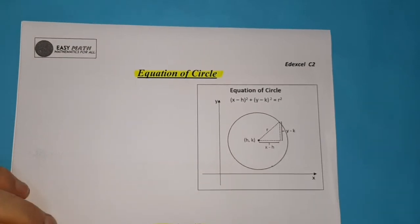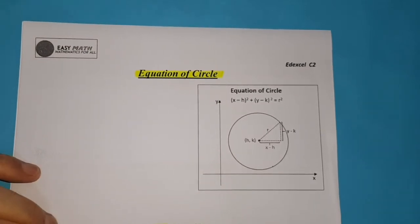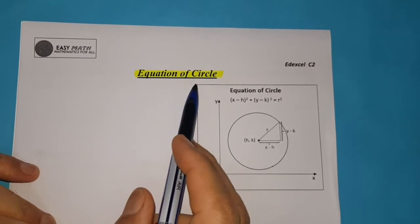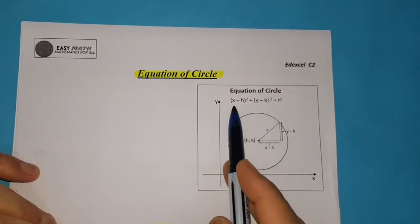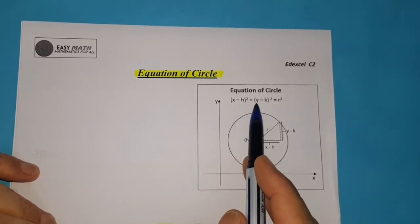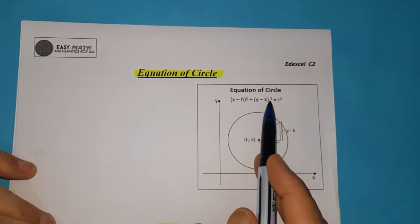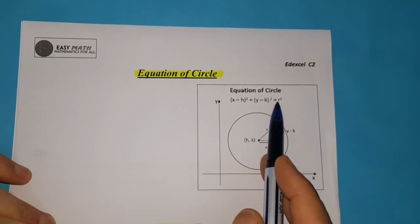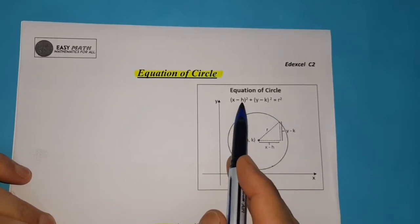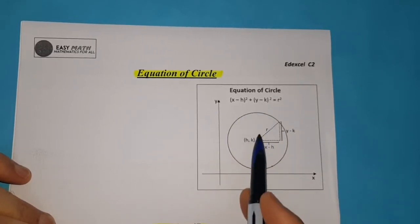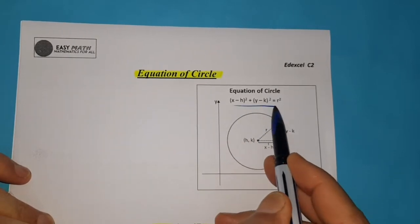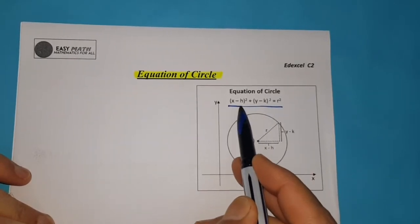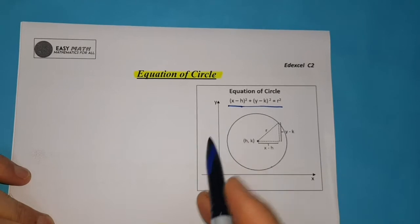Hello everyone, welcome back to Core Mathematics 2 Edexcel, Equation of Circle. The equation of a circle is (x minus h) all squared plus (y minus k) all squared is equal to r squared, such that h and k is the center of the circle. This formula can be derived easily from applying the Pythagorean theorem.